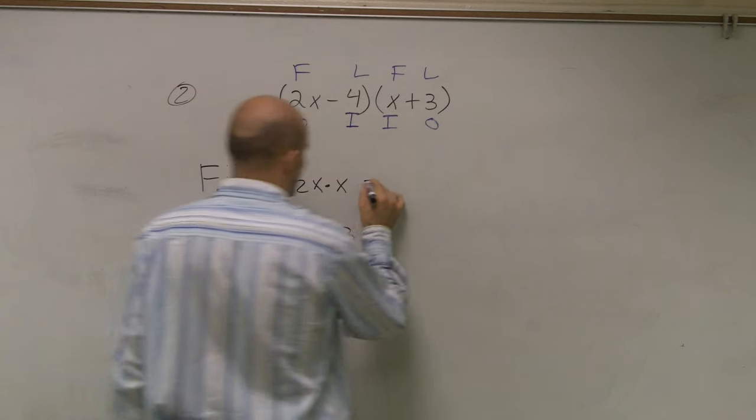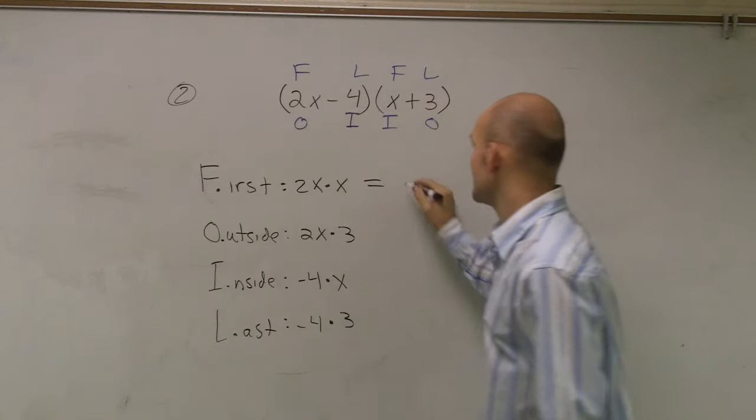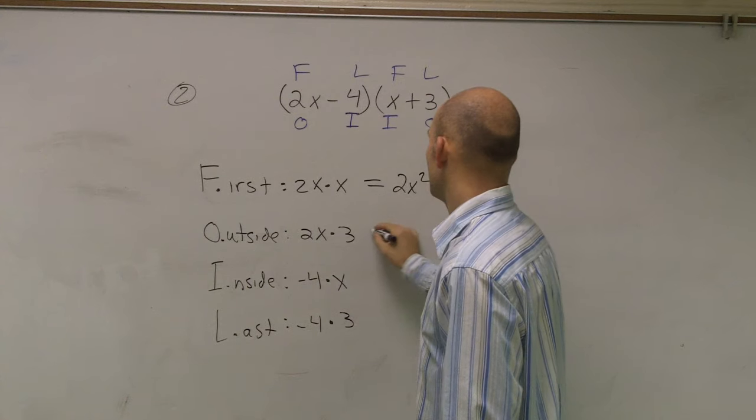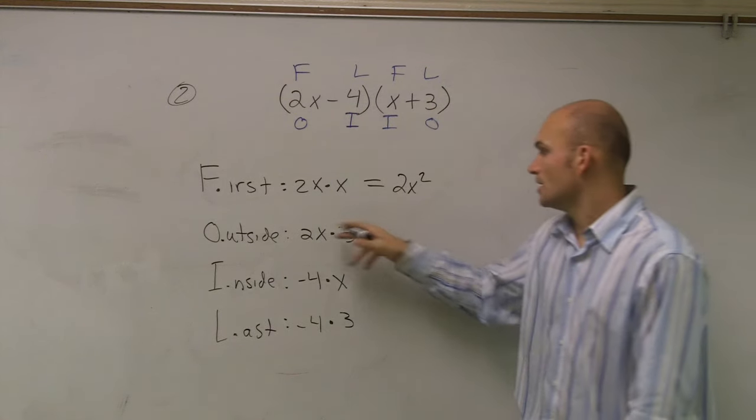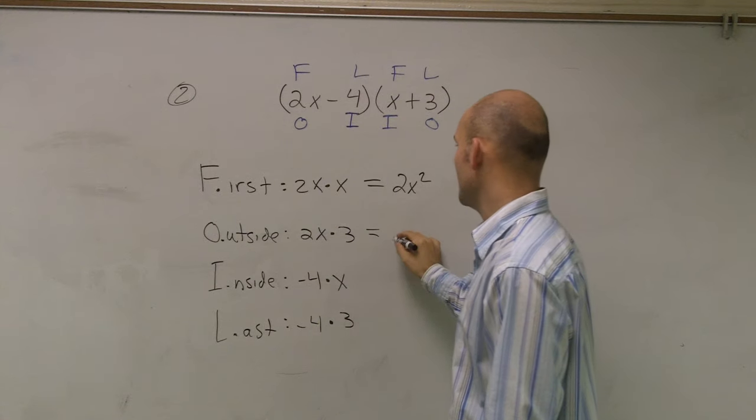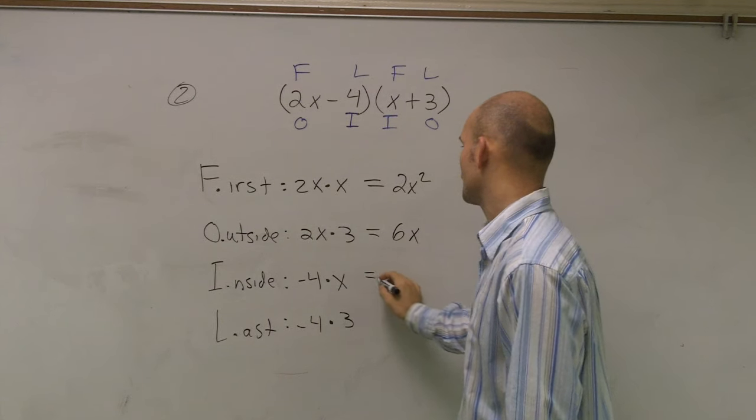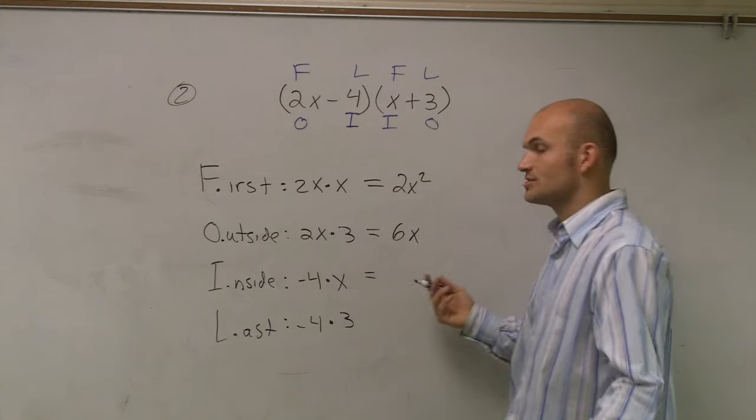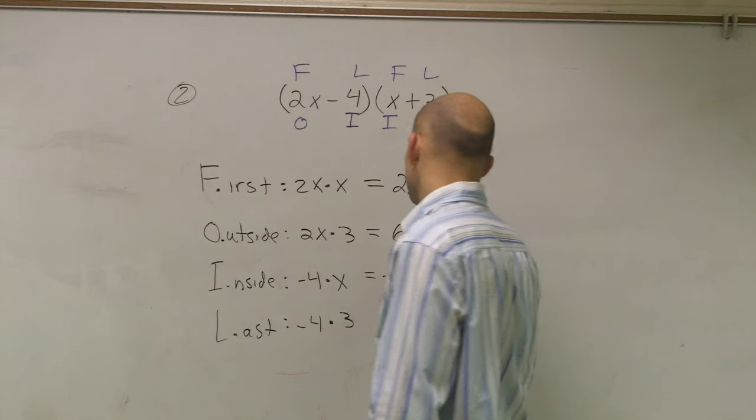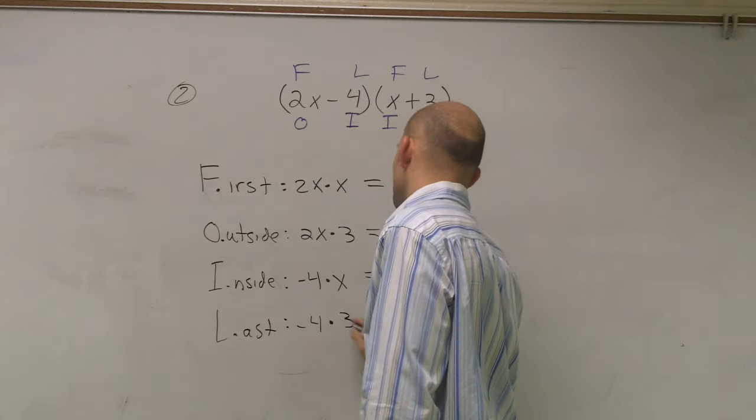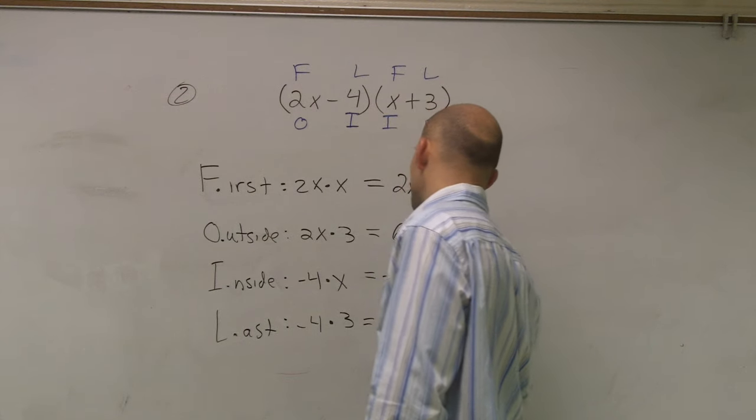Then you just simply do the math. 2x times x, 2x squared. Remember, you're multiplying, so you've got to add the exponents. Outside, 2x times 3, 6x. Negative 4 times x, negative 4x. Negative 4 times 3 is negative 12.